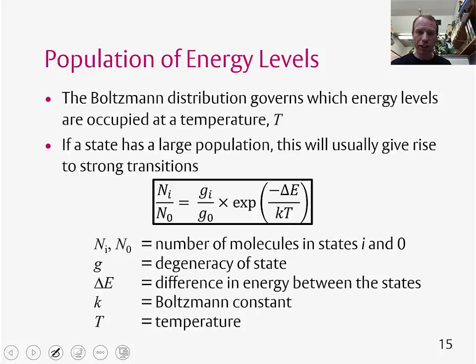We've got a number of terms in this equation. So Ni and N0 give us the ratio of the number of molecules in state i and 0. So that's the left-hand side of this equation. Gi and G0 are the degeneracy of the states. So we need to consider whether a state is degenerate or not when working out the populations of levels.